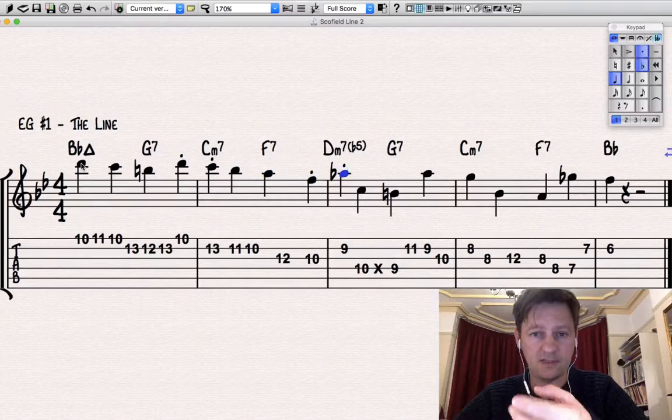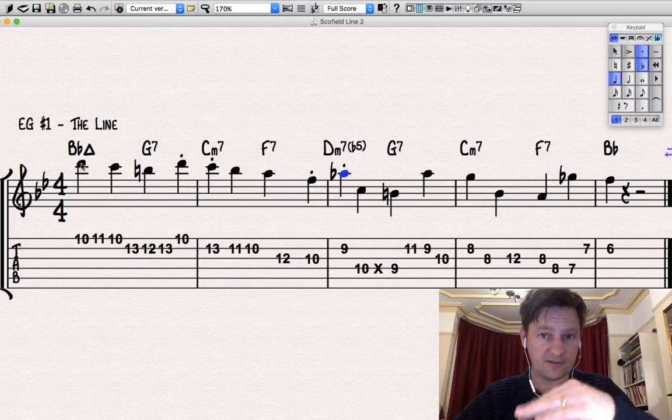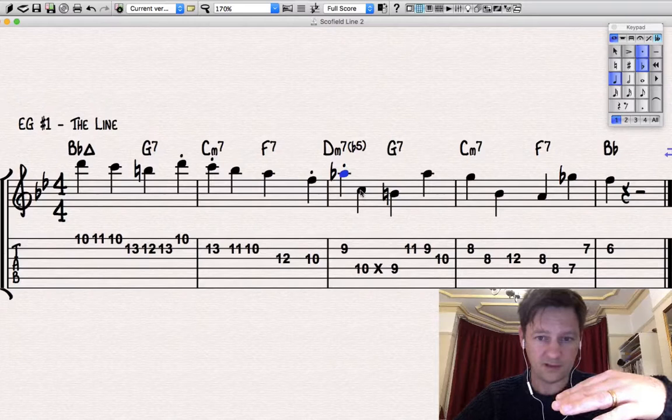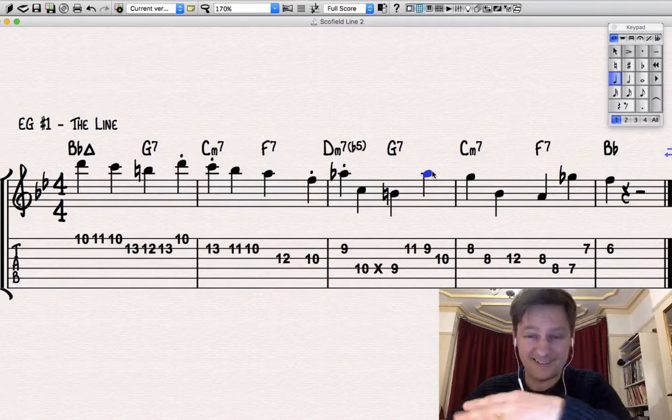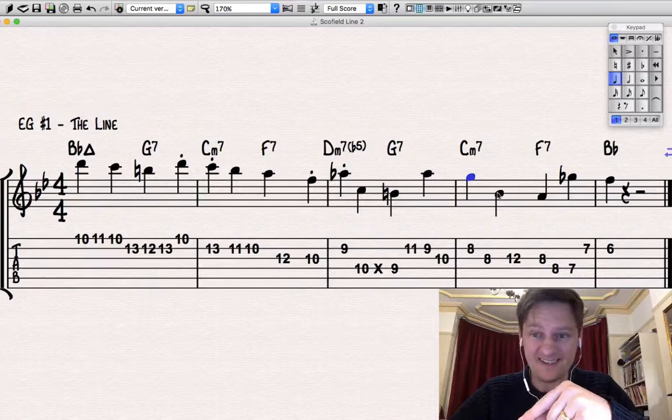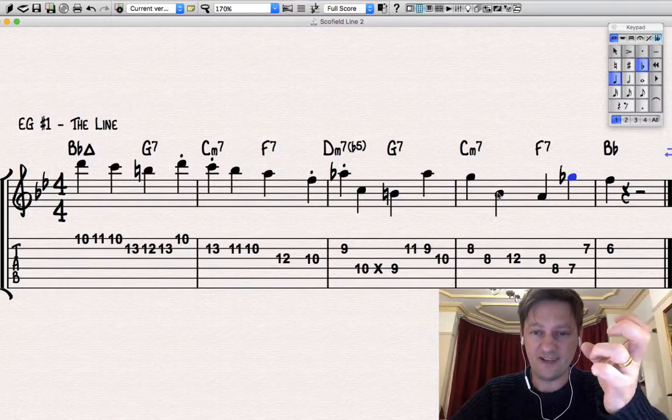That fall down to that third on the F seventh chord, this color note of the flat five on the D minor flat five. And then it's almost like you've got two ideas happening at once here: you've got the third and seventh, that seventh going to the third of the chord, and you've also got this little line at the top kind of descending as well. So it's the flat nine on the G going to the fifth and then seventh on the C minor, going to the third of the F.